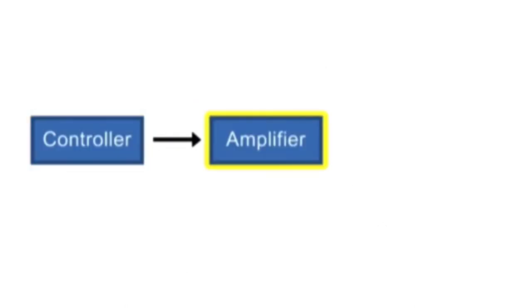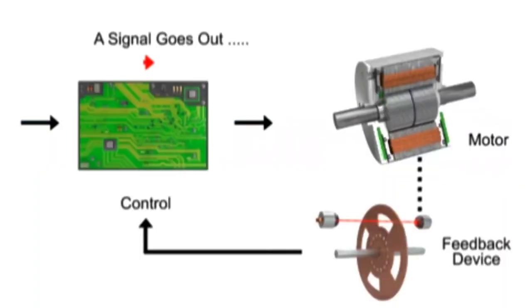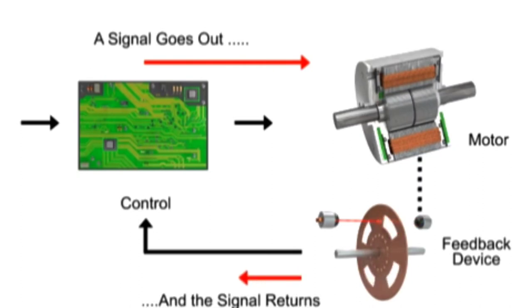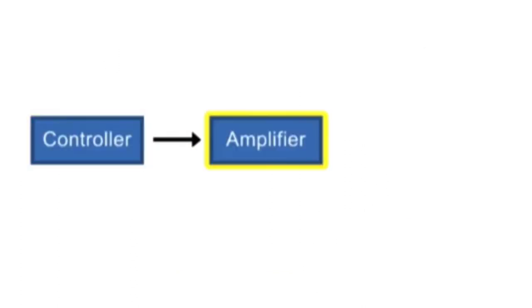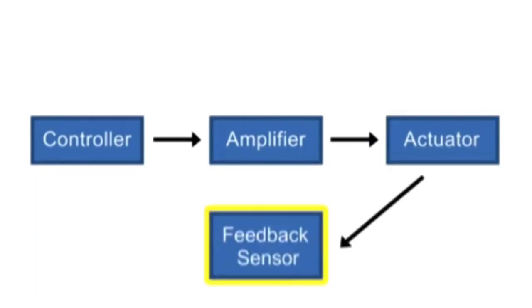Open-loop systems are commonly referred to as non-feedback systems. Closed-loop systems, on the other hand, are designed to automatically maintain the desired output by comparing it with the actual condition. Feedback devices are used to control the outcome and are referred to as closed-loop.